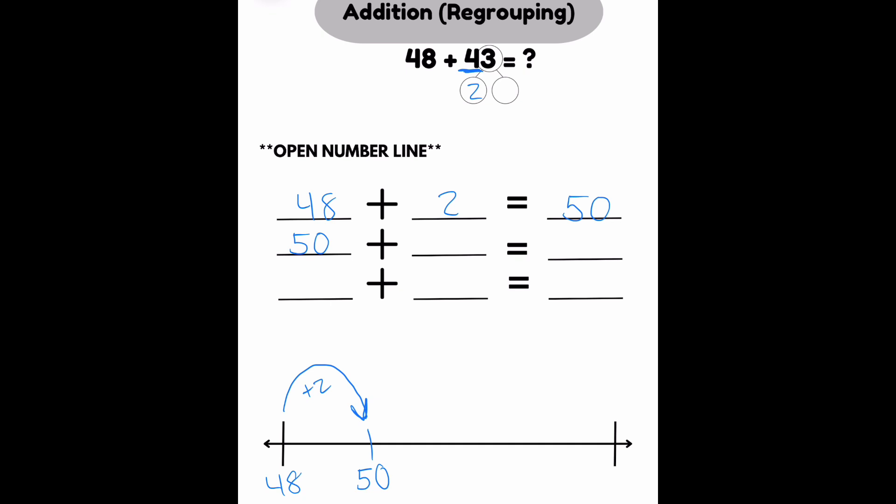Now that I'm at a number that ends in 0, I want to focus on my tens place in that second number of 43. And I see that I have 4 tens there. So I need to jump 40. I know that 50 plus 40 is 90 because 5 plus 4 is 9. And then it's 0 plus 0 after that. So I know that's 90. But I still need to figure out this bond. When we go from top to bottom, we subtract. 3 minus 2 is 1. Which means from 90, I need to jump 1 more to get to 91. So 48 plus 43 is 91.